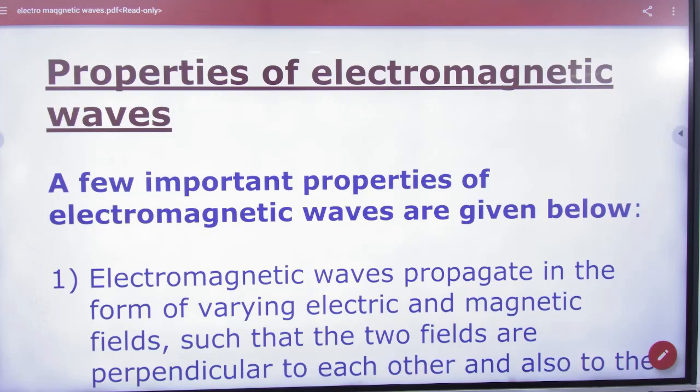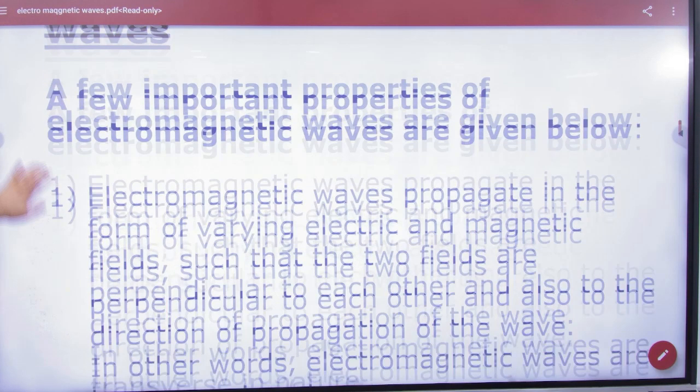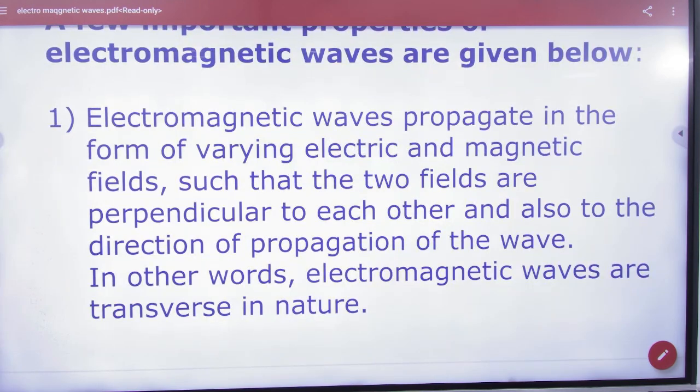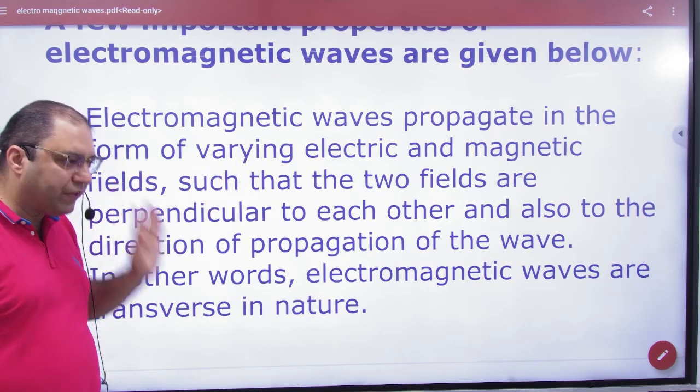Properties of EM waves. Electromagnetic waves propagate in the form of varying electric and magnetic fields.